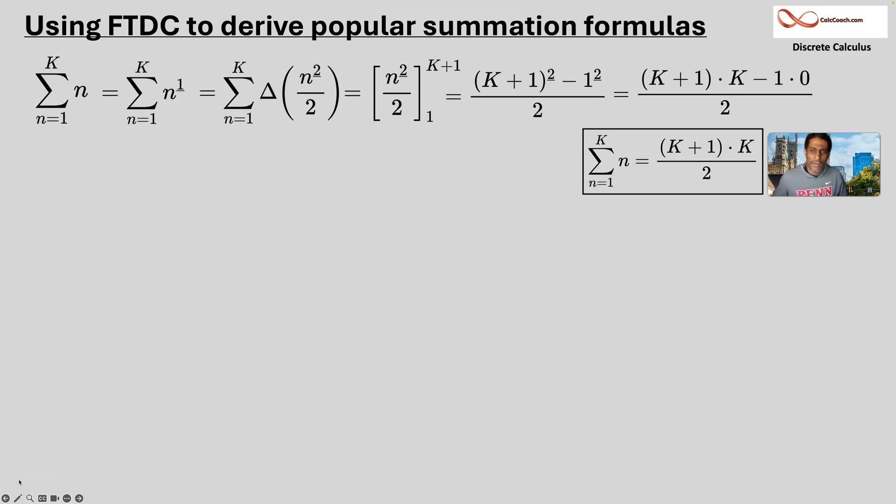Your formula for adding up the first k integers is k times k plus one over two. Hopefully you've seen that formula before. Maybe not proved in this way using falling polynomials, falling powers, but that's it. Okay.